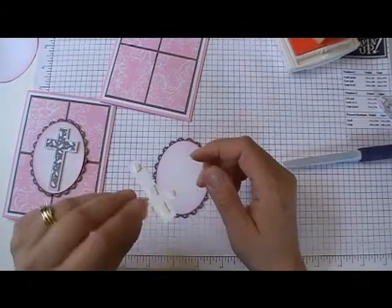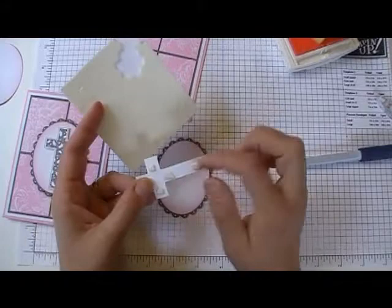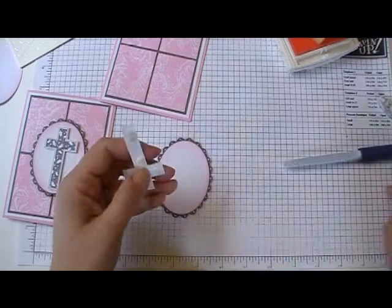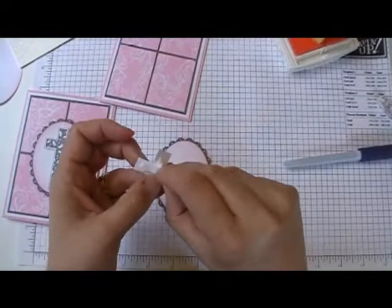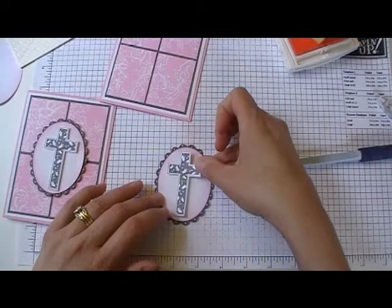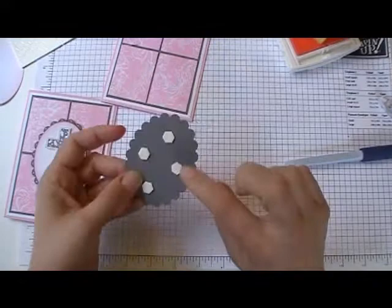And I stamped this in basic gray, just on whisper white paper, and I cut it out. And then I also cut up my dimensionals. I cut them small when I have small areas to cover so you don't see it. And I'll just take these off. I just want to lay this down. Popped up. The center.